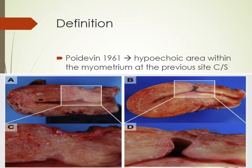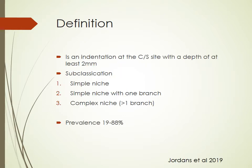The definition dates way back to Puyodevine in 1961, where he said this is a hypoechoic area within the myometrium at the previous caesarean site. It moved on to a 2011 definition where it was described as a pouch-like, anechoic weak area at the caesarean scar with a depth of at least one millimeter. Jordans et al. defined it as an indentation at the caesarean scar site with a depth of at least two millimeters, and further subclassified the niche into a simple niche with one branch and a complex niche with more than one branch.